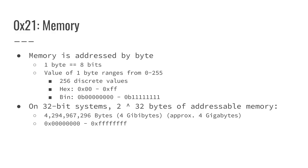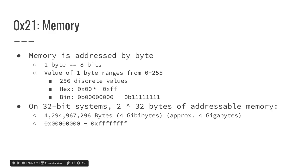This will probably be review for a lot of you, but memory is addressed by byte. A byte can take on values 0 through 255, which means there are 256 discrete values. In hexadecimal, a byte goes from 0x00 to 0xFF. In binary, that's eight zeros to eight ones. On 32-bit systems, that means you can address approximately four gigabytes.